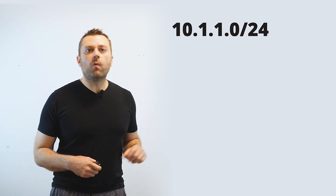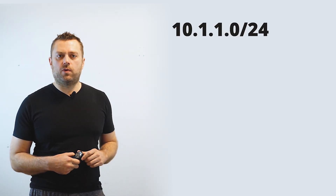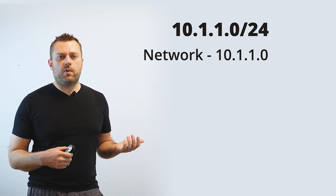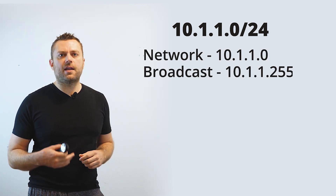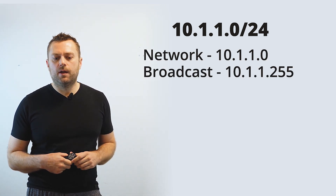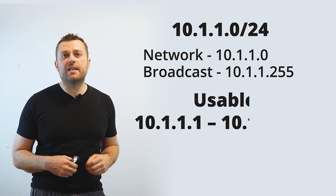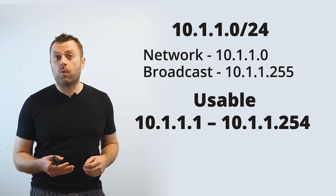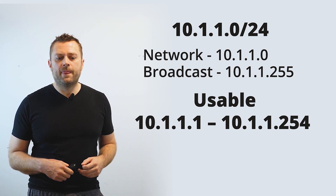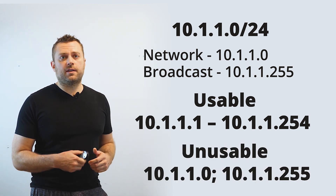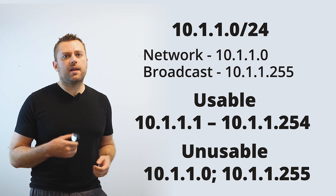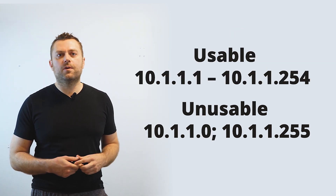But let's focus more on your local network — your network .0 and your network .255, your local network and broadcast. Here's an example: you have 10.1.1.0/24. So your network is 10.1.1.0 and your broadcast is 10.1.1.255. Your usable address space is 10.1.1.1 through 10.1.1.254, and your unusable is 10.1.1.0, which is your network, and 10.1.1.255, which is your broadcast.